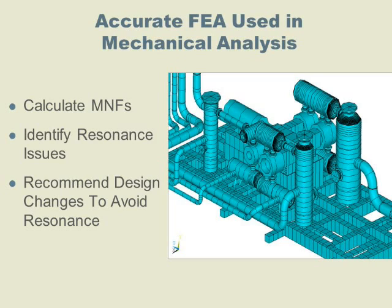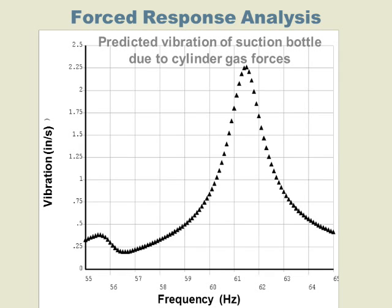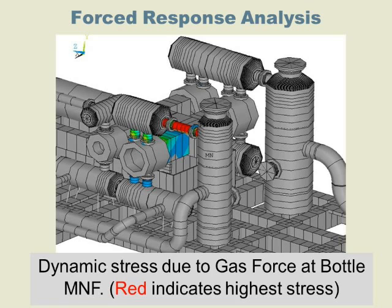The ideal solution is to modify the natural frequency of the piping system to avoid resonance. But sometimes it is impossible to do this, especially with variable speed compressors. In these cases, Beta will conduct a forced response analysis to evaluate if the predicted vibration and stress is below acceptable guidelines.